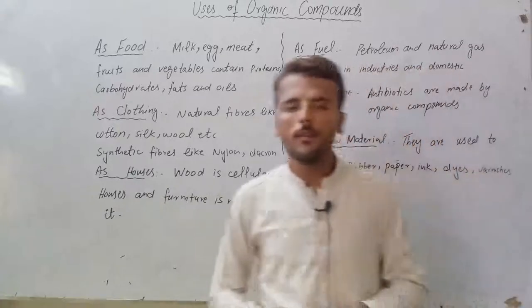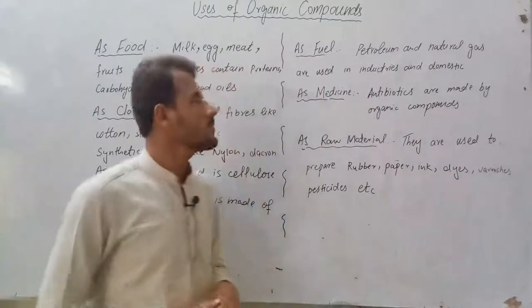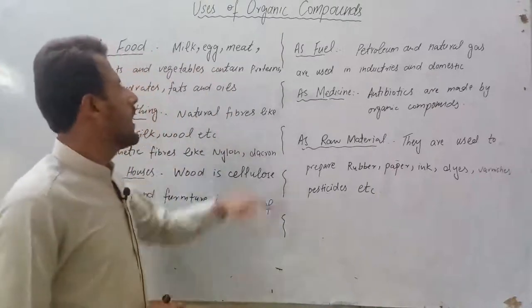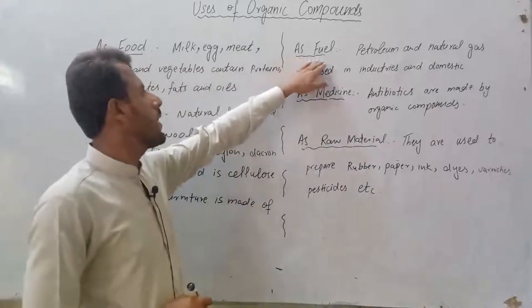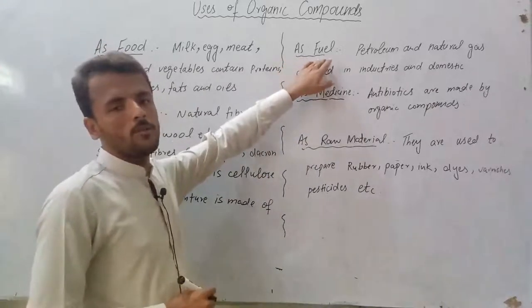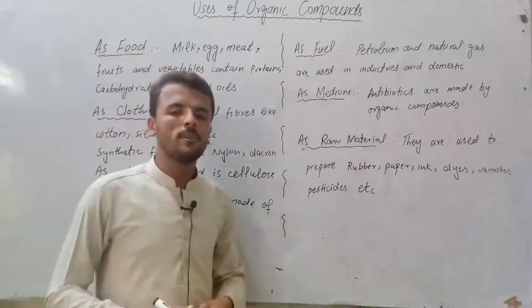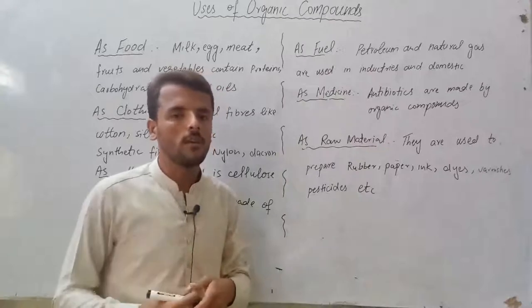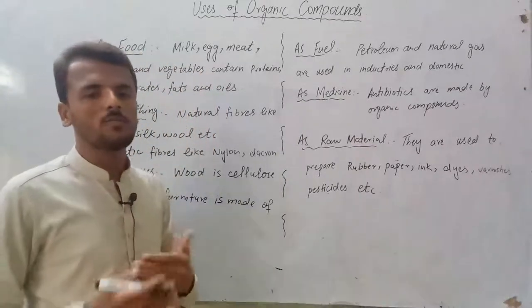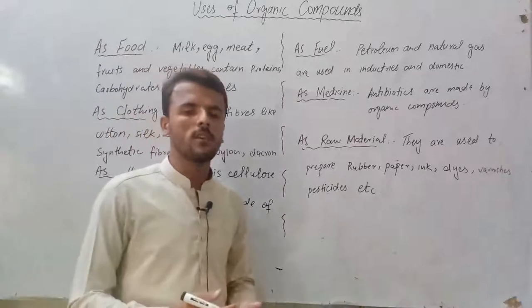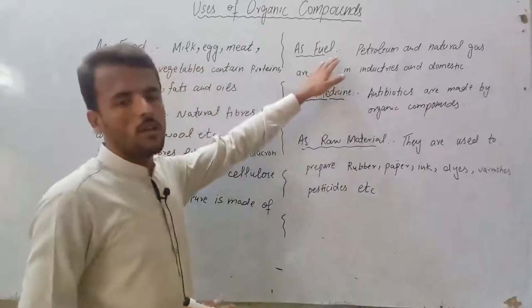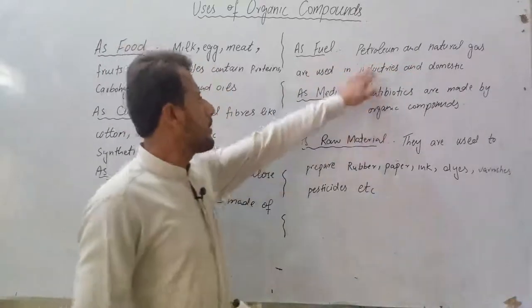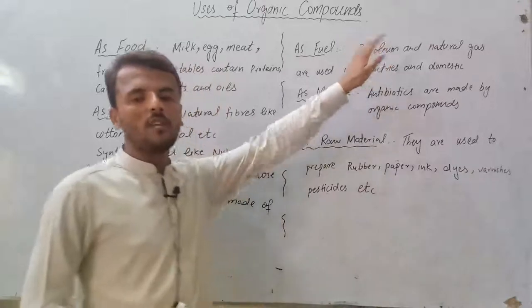The 4th use of organic compounds is as fuel. Fuel is anything that burns and gives you energy — to power machines and engines. We have petroleum and natural gas as fuels. For example, petroleum gives us gas and diesel.